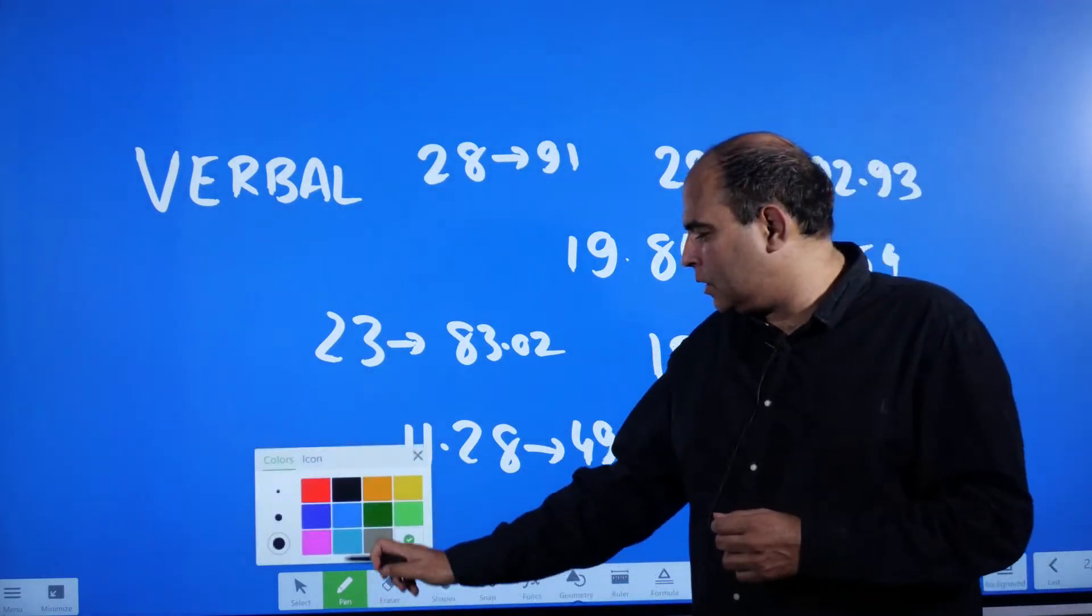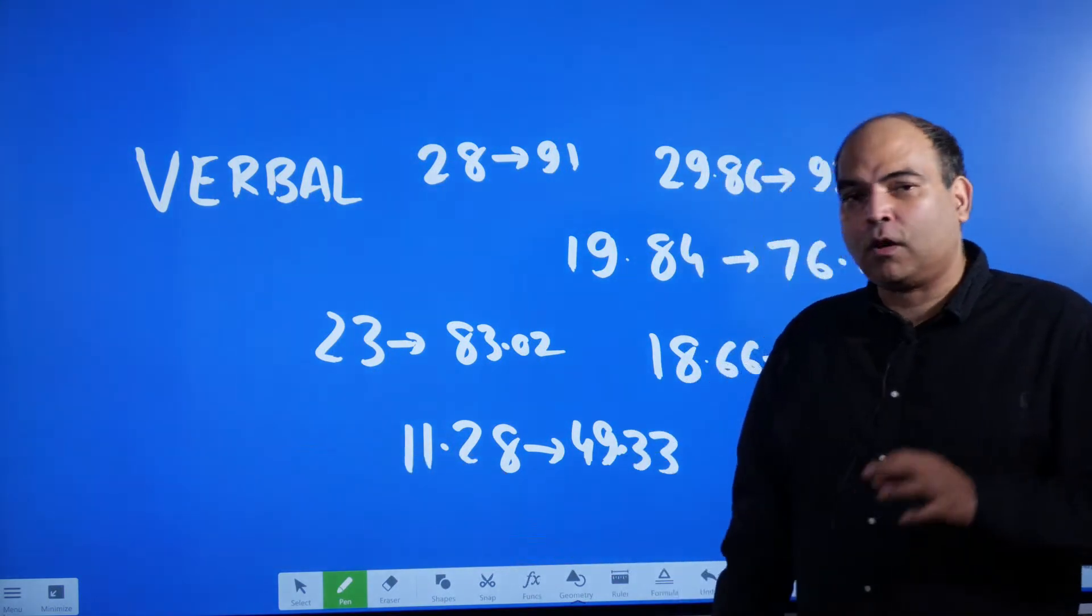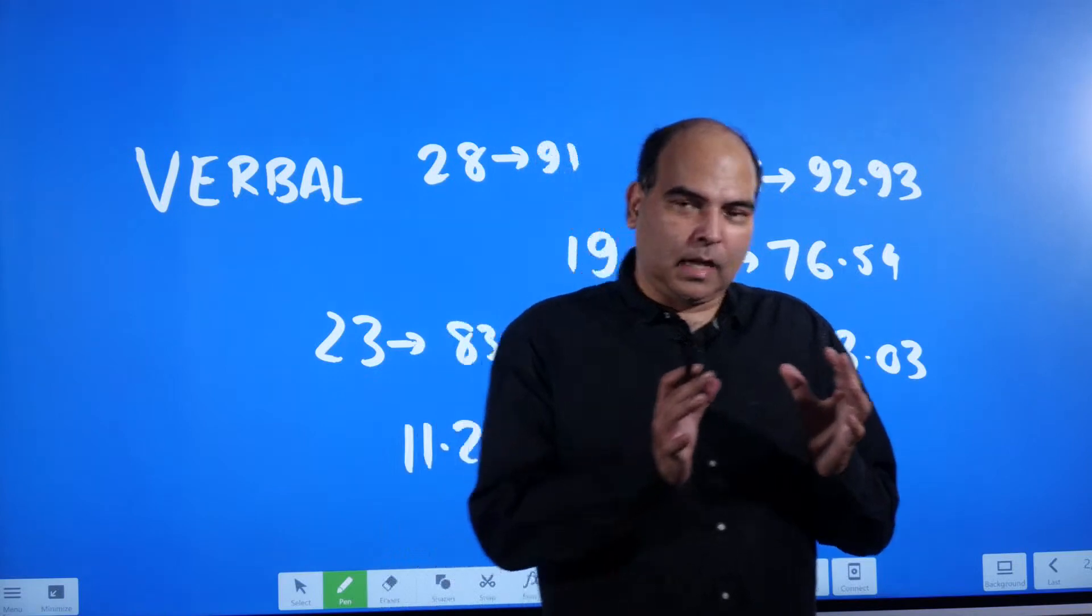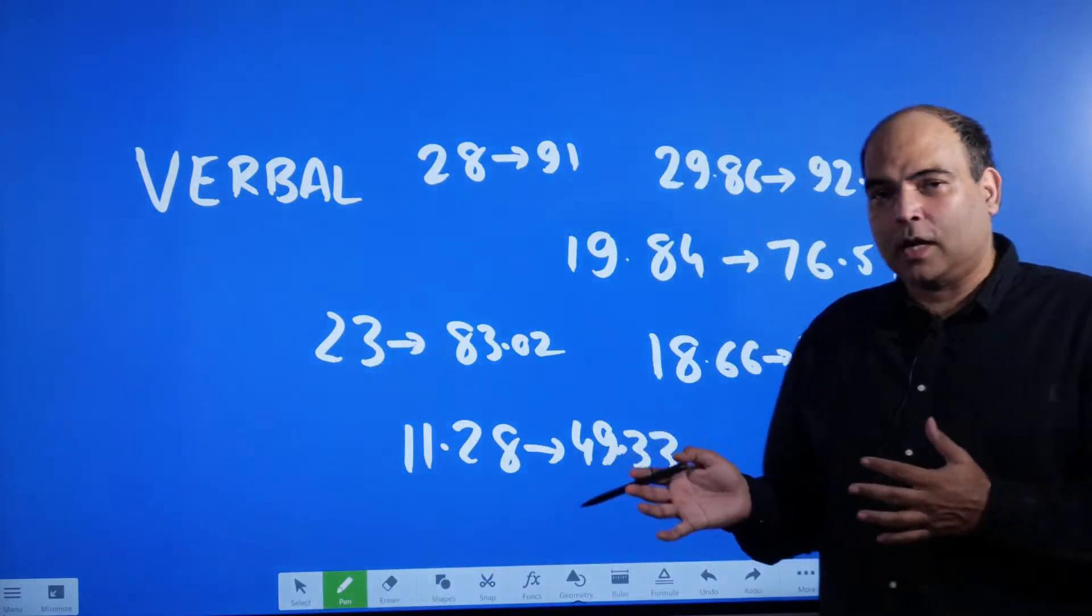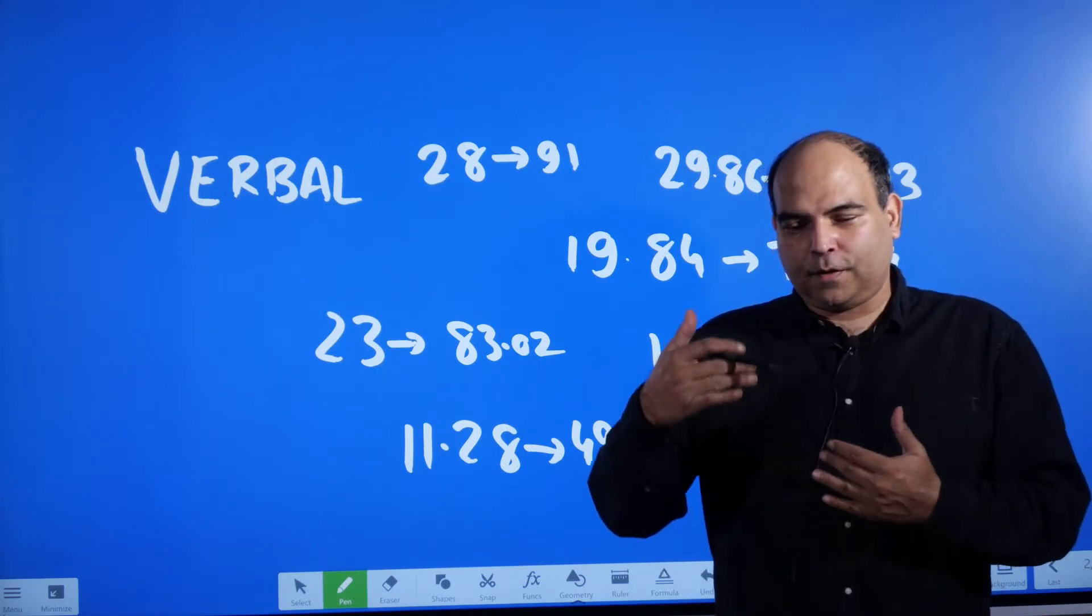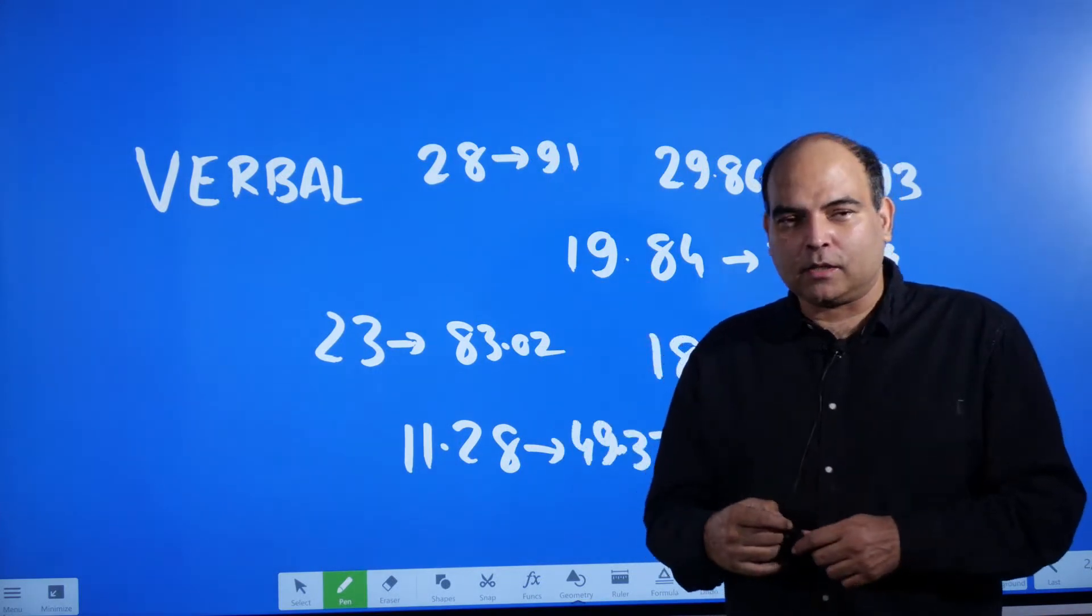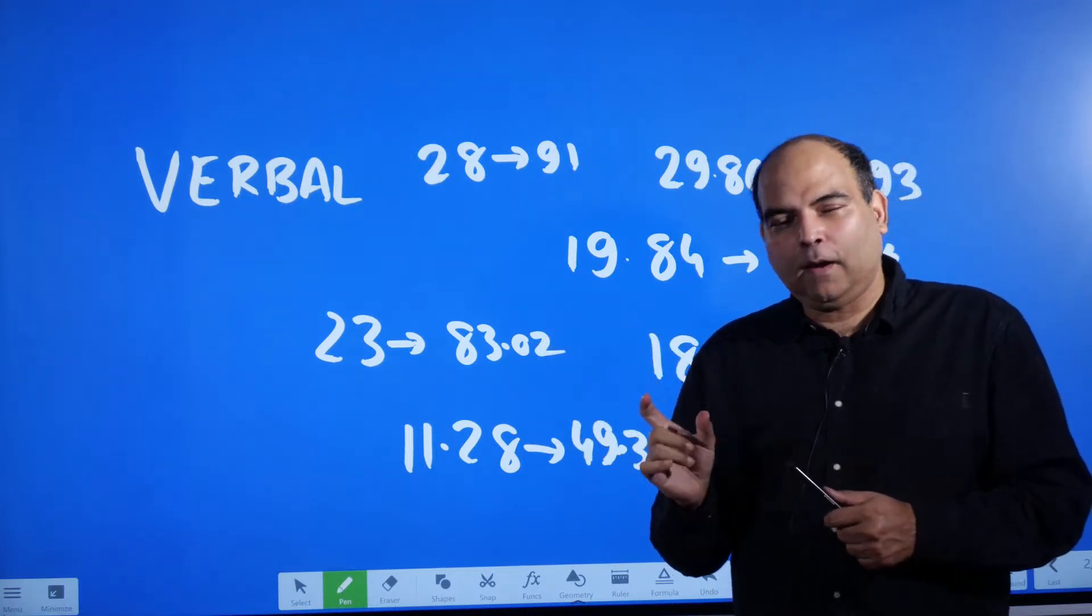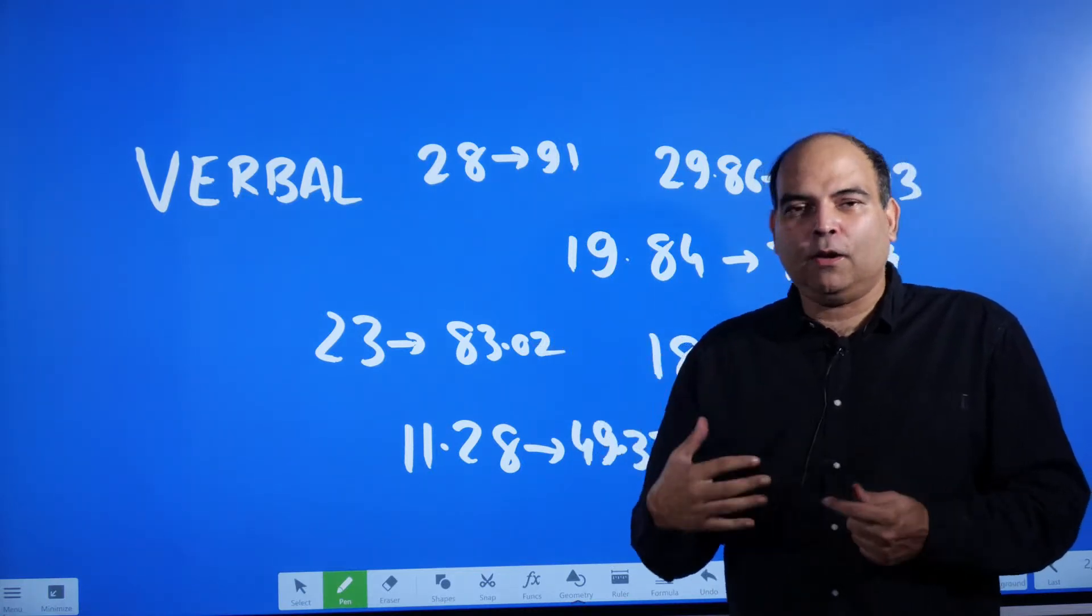So what we will do is, we will first analyze what the percentile values were at what scores last year, at different score points last year. Then we will try to look at what the bands were for the different major percentile markers, 50, 70, 80, 90 percentiles. And then we will try to reason out.